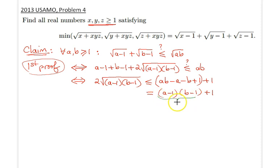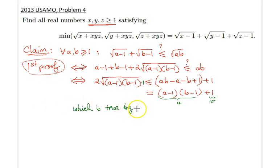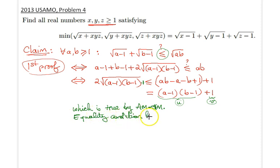That is simply true because of AM-GM. Call the whole expression u and the constant 1 as v. When you apply AM-GM, you get the arithmetic mean on one side and √(u·1) on the other, which is obviously true by the AM-GM inequality. The equality condition in AM-GM holds when the two terms u and v are equal, so equality holds when (a−1)(b−1) = 1.